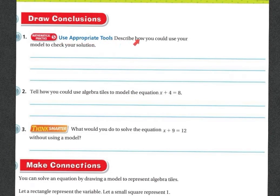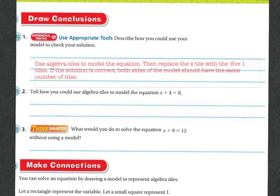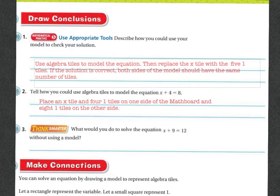Use appropriate tools. Describe how you could use your model to check your solution. Use the algebra tiles to model the equation, then replace the X tile with 5 one-tiles. If the solution is correct, both sides of the model should have the same number of tiles. For number 2, tell how you can use algebra tiles to model X plus 4 equals 8: place an X tile and 4 one-tiles on one side, and 8 one-tiles on the other side.